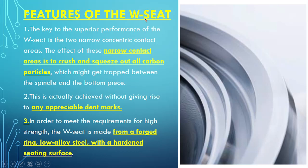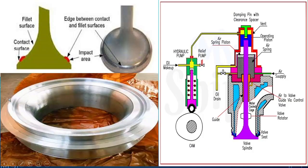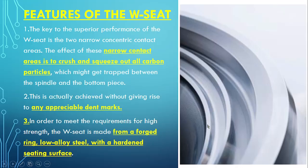Earlier, the seat used to be continuous with a slight inclination on the inner side — that was the earlier design. This was the exhaust valve, and it used to have a seat with an impact area on which it had a sealing surface. In a normal exhaust valve, the cam hydraulically pushes fluid to operate the hydraulic piston and open the valve. It closes against an air spring. The seating surface was between the valve and the valve seat, but the change brought was having three concentric circles.